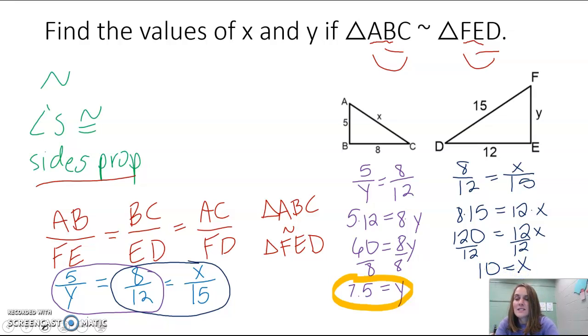And there we found the two values that we were looking for. X is 10 and Y is 7.5. So really, we also know the measures of the sides of our triangle that we're missing. X is 10 and Y is 7.5.